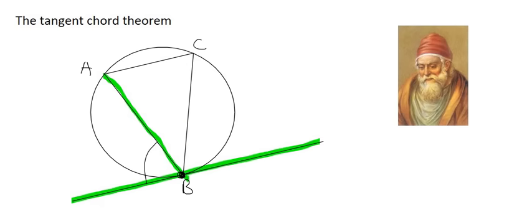Now what Euclid found was that the angle we have just made will always be equal to any other angle that the chord makes. The chord we are using is AB. We saw that that chord forms angle C, and so what Euclid said is that angle B will be the same as angle C.